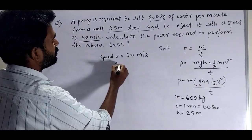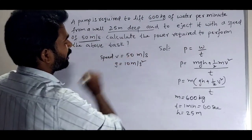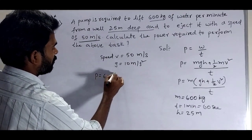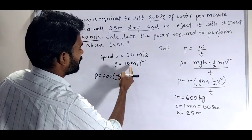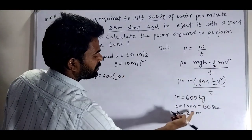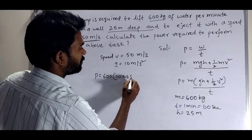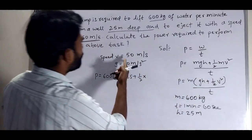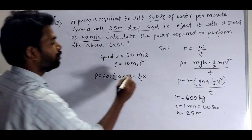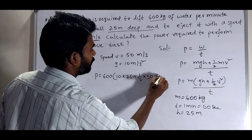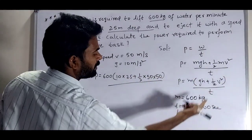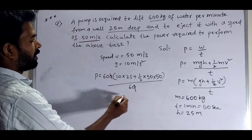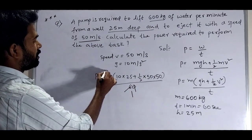Now substitution: P equals 600 times 10 into H, 25 meters, plus 1 by 2 into V square, 50 into 50, divided by time 60 seconds. After cancellation, 60 becomes 6 and 10.